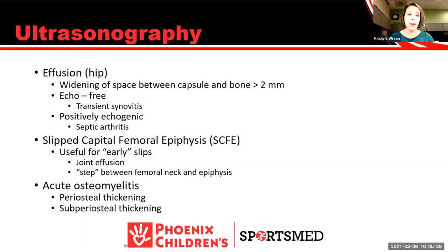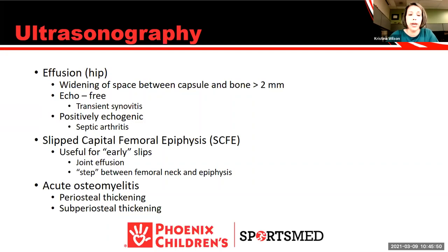Ultrasonography is becoming a big part of our curriculum. For hip effusions, you can differentiate transient synovitis from septic arthritis by echogenicity — transient synovitis is echo-free while septic arthritis is echogenic. You can also see widening of the joint space greater than 2 millimeters. With SCFE, ultrasound can reveal early slips, joint effusion starting, and sometimes the step between the femoral neck and epiphysis. With osteomyelitis, you can sometimes detect periosteal and subperiosteal thickening.